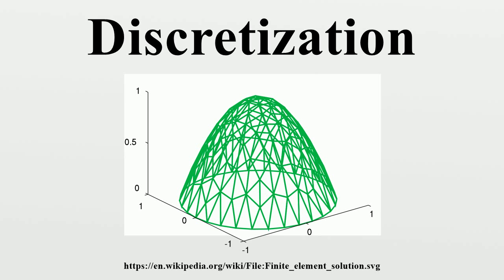Discretization of continuous features. In statistics and machine learning, discretization refers to the process of converting continuous features or variables to discretized or nominal features. This can be useful when creating probability mass functions.